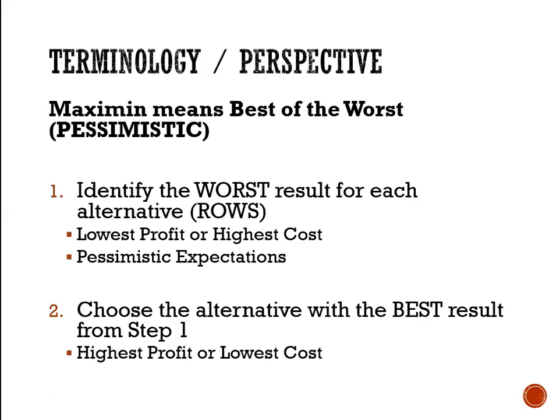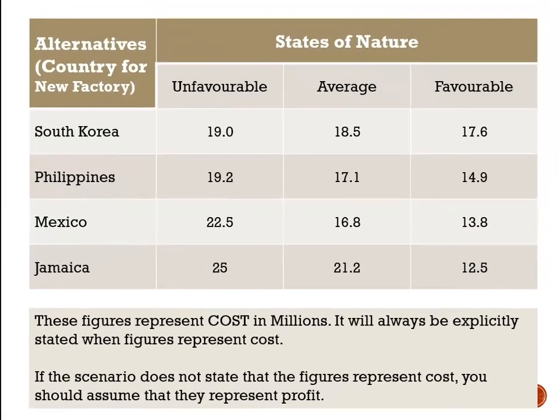First, we identify the worst result for each alternative, going across the rows. Then we choose the best alternative from those identified.